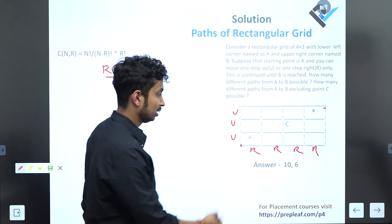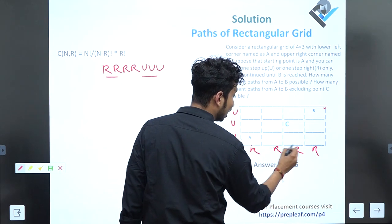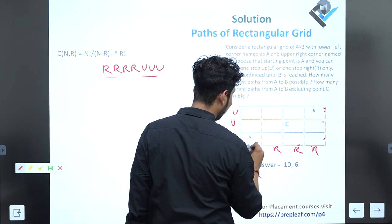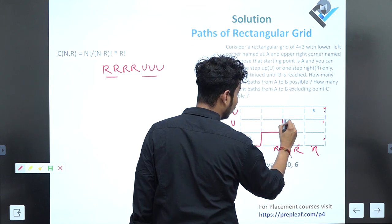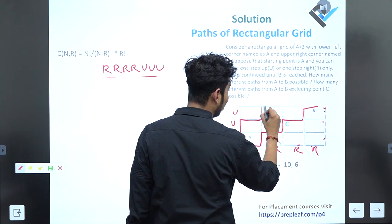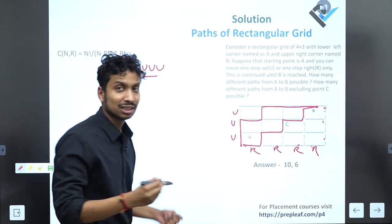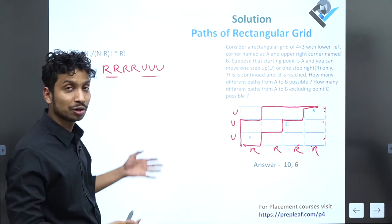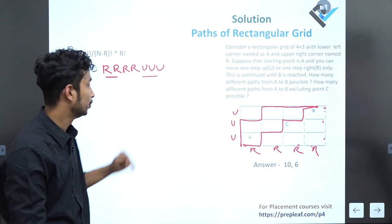That is your answer: how many ways a person can reach from A to B. Either he can reach R R R R U U U, or R U R U R U U R, or U U R U R R R. It's just like the number of combinations of R R R R U U U.